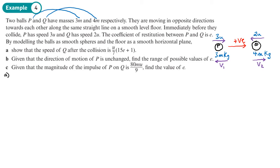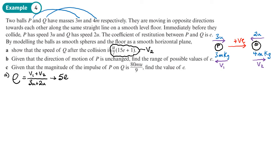Part a: show that the speed of Q after the collision is u over 7 times (15e plus 1). We need two equations. For the restitution equation: e equals speed of separation over speed of approach. The speed of separation is v1 plus v2 (they move in opposite directions), and the speed of approach is 3u plus 2u equals 5u. So 5eu equals v1 plus v2 — equation one.